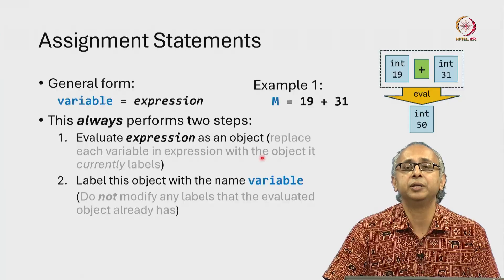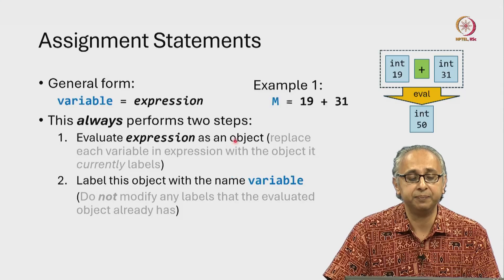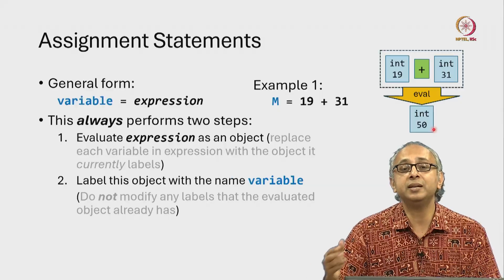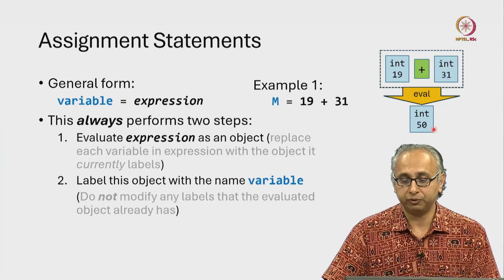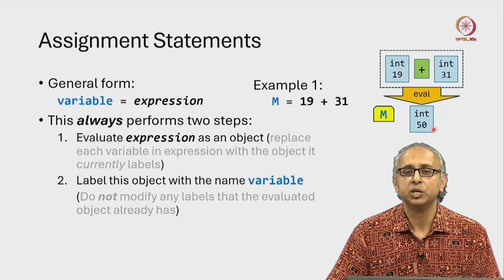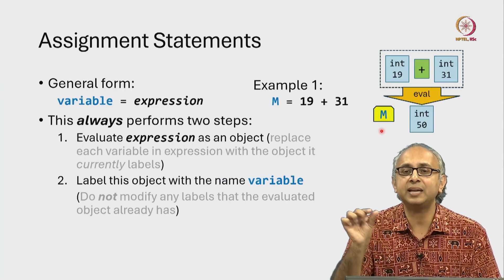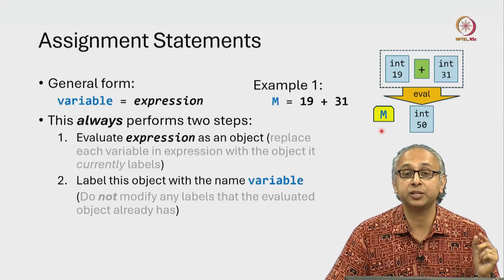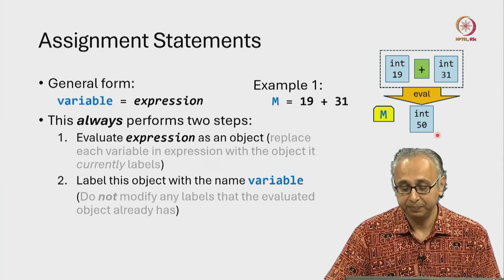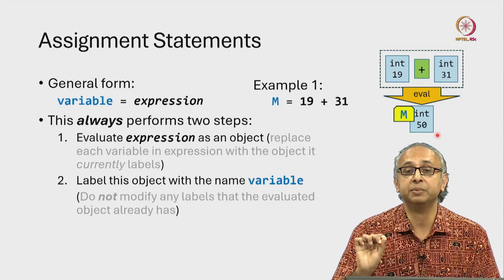Once we have done step one — ignoring the details in light grey font for now — we have a variable on the left hand side. So step two tells us: label this object, the one we have just evaluated, with the name of this variable. The variable is called M and we just label this object with this tag. Think of this variable like a little sticky tag that we can attach to an object. Calculate the object on the right hand side, evaluate it, then take this label and stick it on the object. That is an assignment statement.